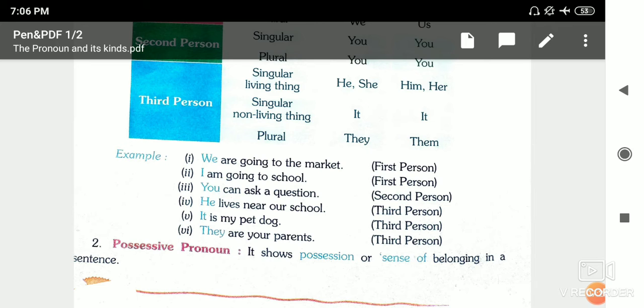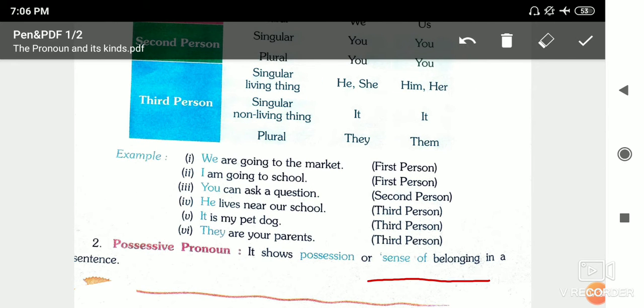Next is possessive pronoun. Possessive pronoun shows possession or sense of belonging in a sentence. Belonging means something belongs to you. For example, this phone belongs to me. Or we can say this phone is mine. So 'mine' is a possessive pronoun here.